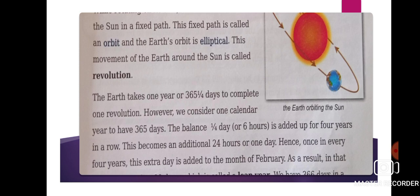The balance of one-fourth day, or six hours, is added up over four years. After every four years we have 29 days in February. Why? Because we take all the one-fourth days of each year and calculate them — that is approximately six hours each. So six plus six plus six plus six: six fours are 24, so it becomes one extra day. We add that one day every four years in the month of February. That is why we have a leap year, which has 366 days. Any year divisible by four is a leap year.